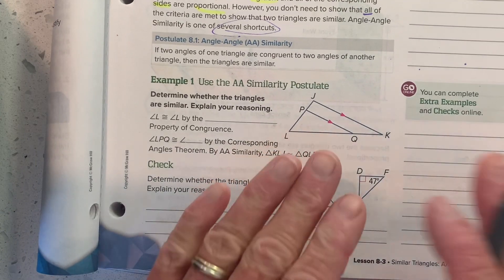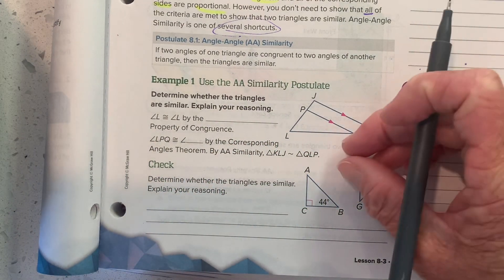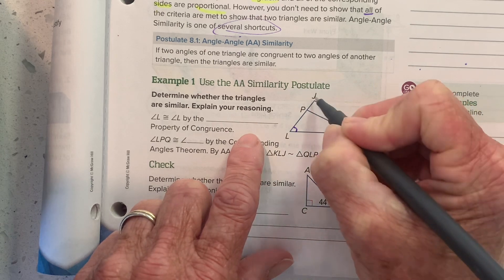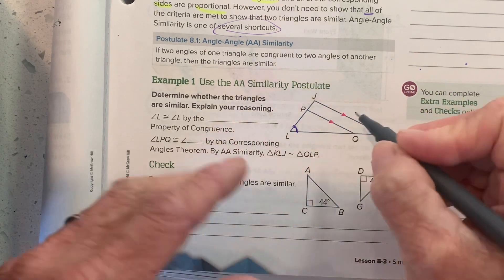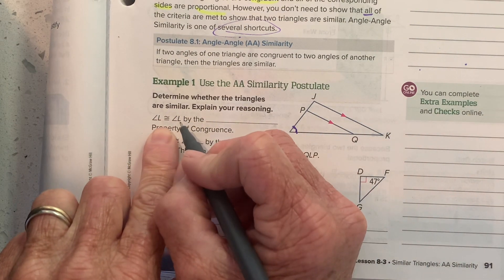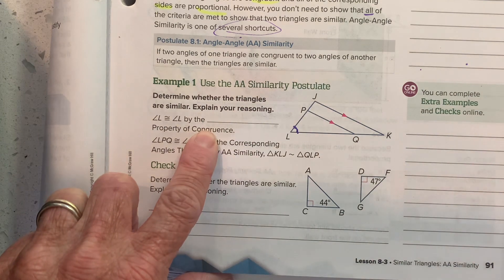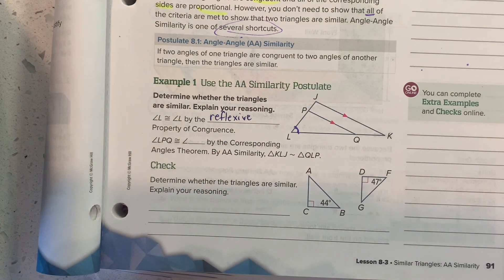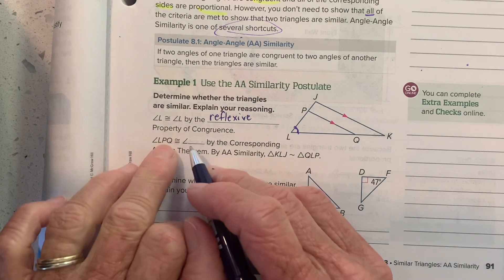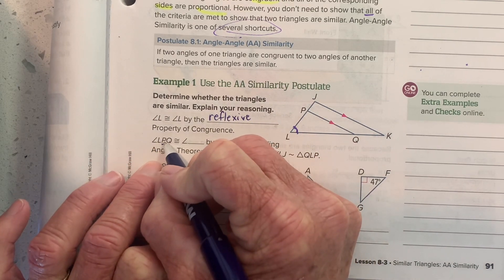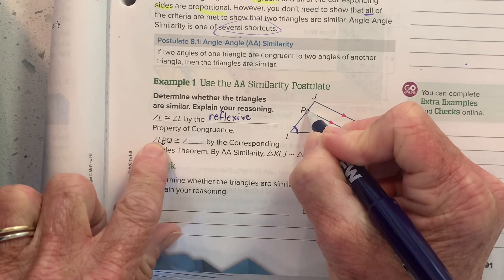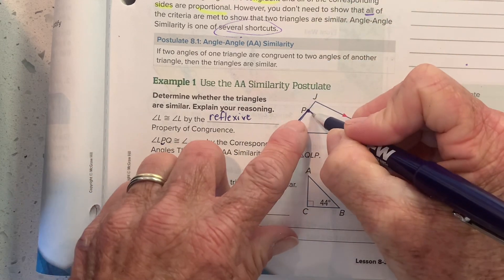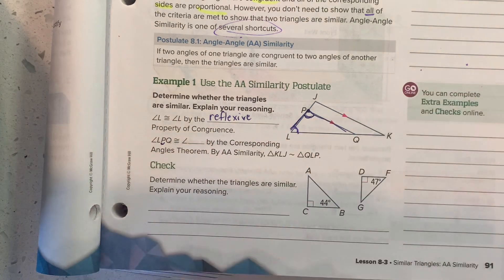Here's the first example. We have two triangles in this picture — the smaller one is nested inside the larger one. Angle L is an angle in both the small triangle and the large triangle; they share that angle, so it has to be congruent in both by the reflexive property of congruence. Angle LPQ — P is the vertex, L is on one side, Q is on the other — that is the angle we're referring to right there.